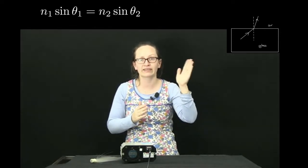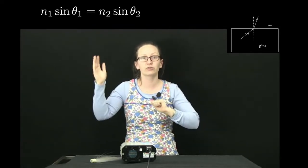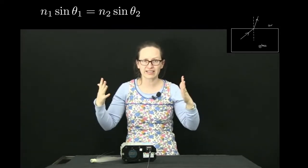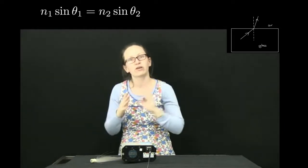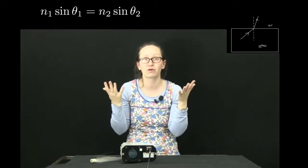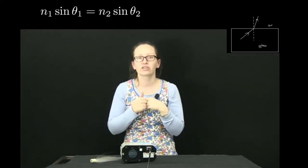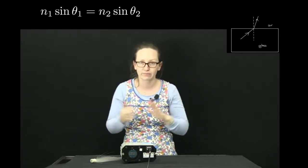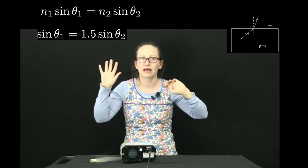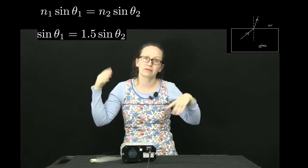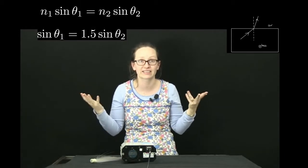One way that we can write Snell's law is n1 sin θ1 equals n2 sin θ2. Let's consider now the light ray traveling from the glass into the air. We'll consider glass to have a refractive index of 1.5 and air to have a refractive index of 1. So we can write that sin θ of the angle in air is equal to 1.5 times sin θ2, where θ2 is the angle it makes in the glass, so the angle of incidence inside the glass.